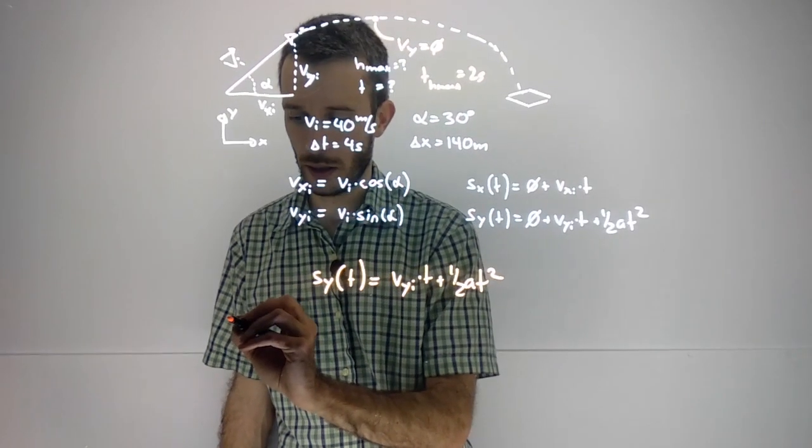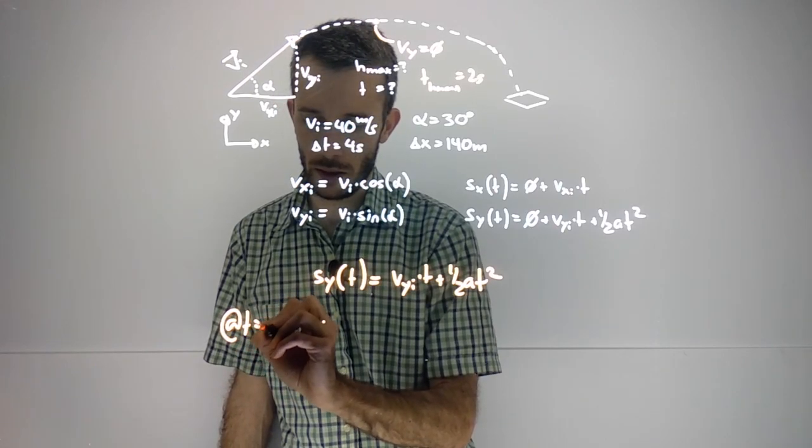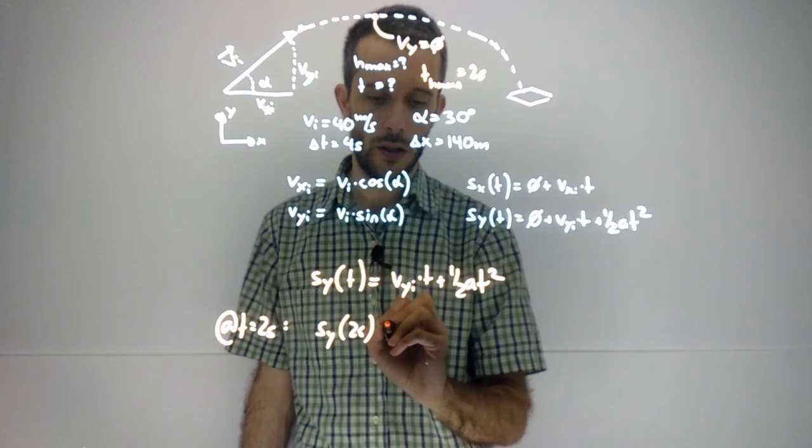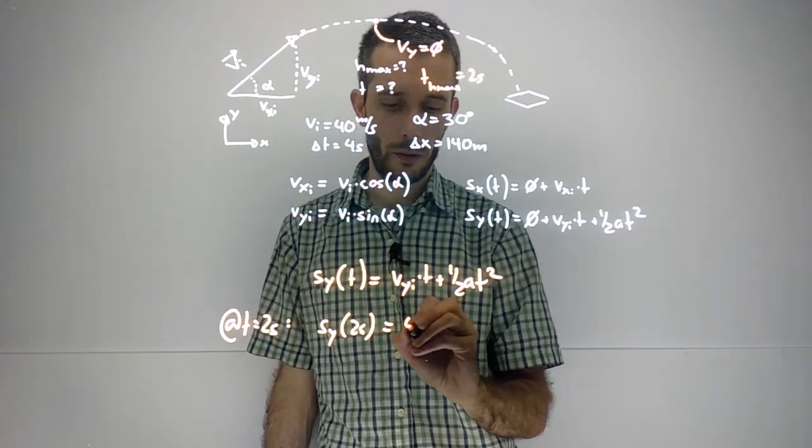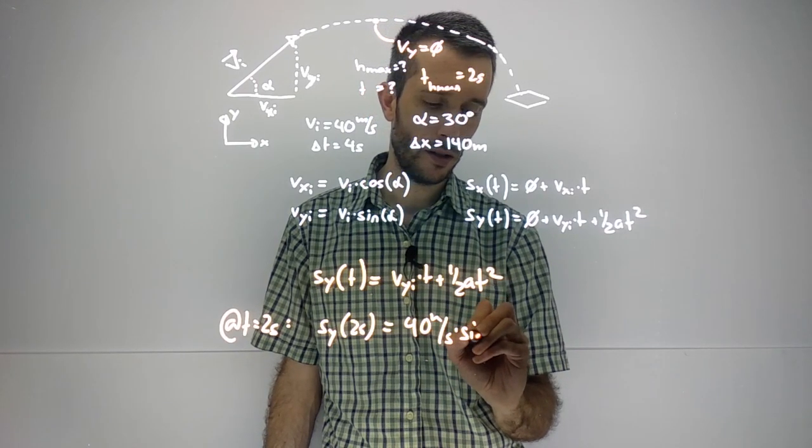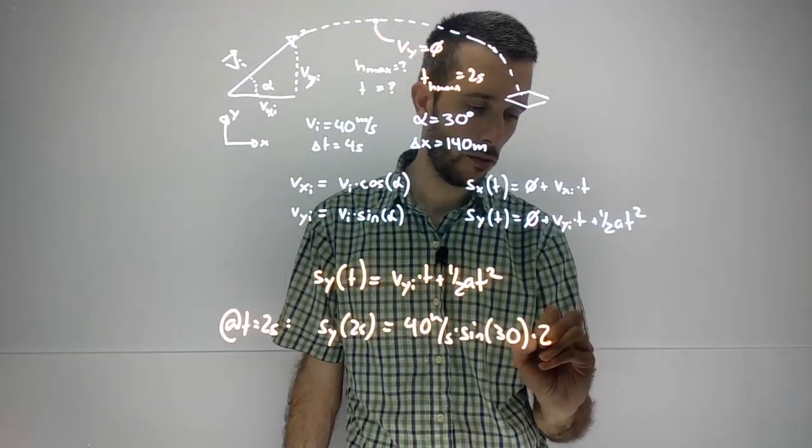So in our case, at t equals 2 seconds, which is our highest point, I get 40 meters per second times sine of 30 times 2 seconds,